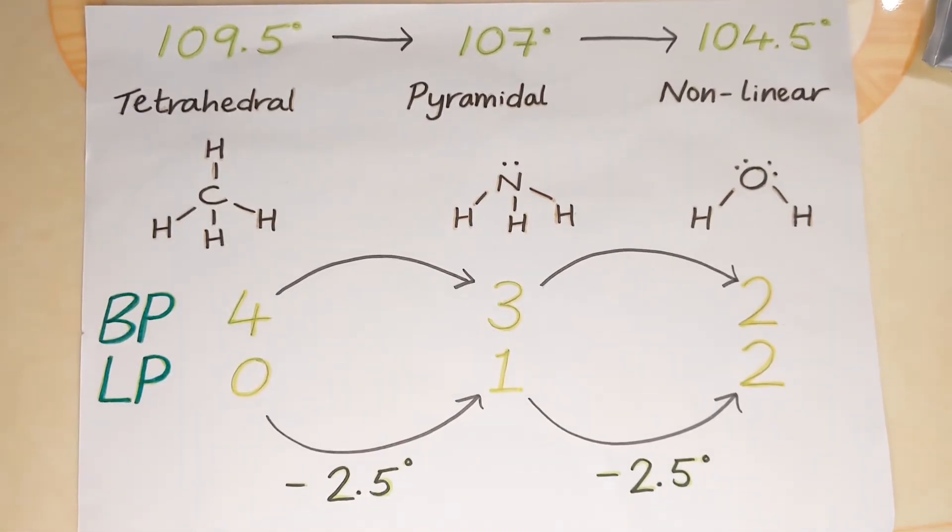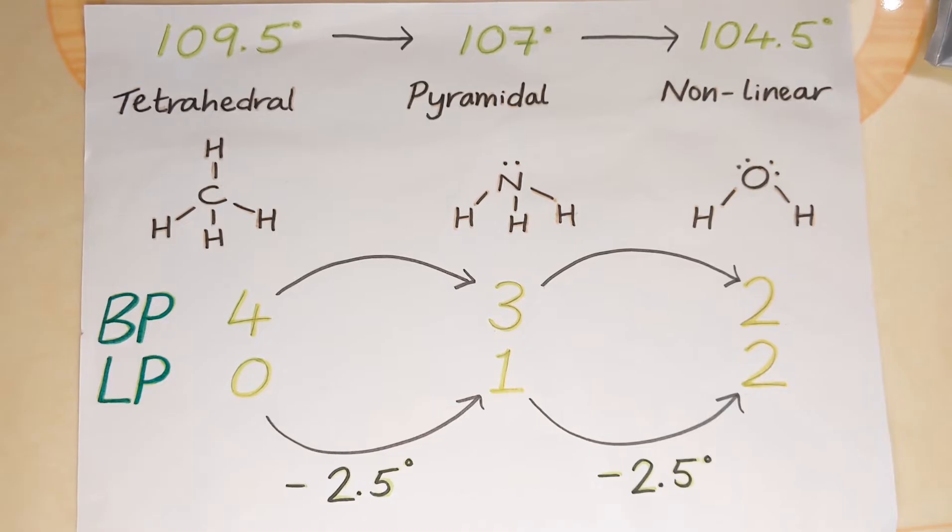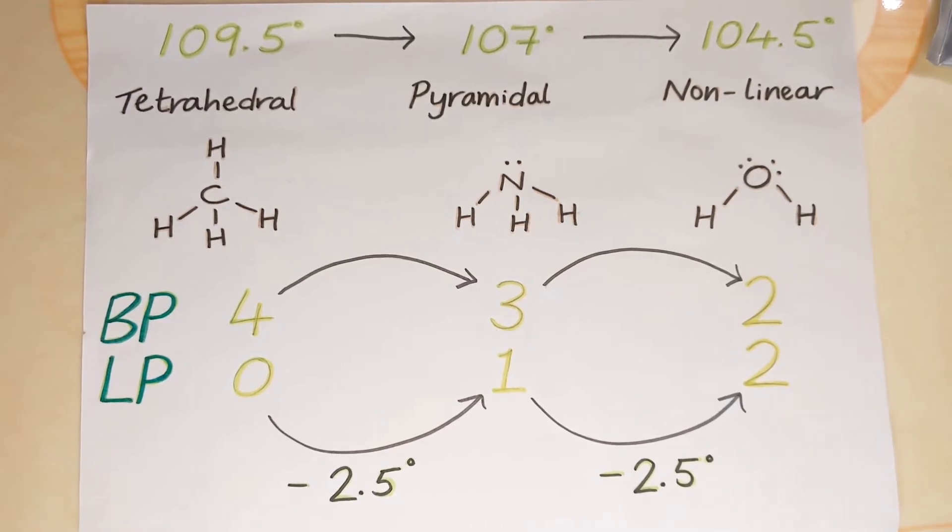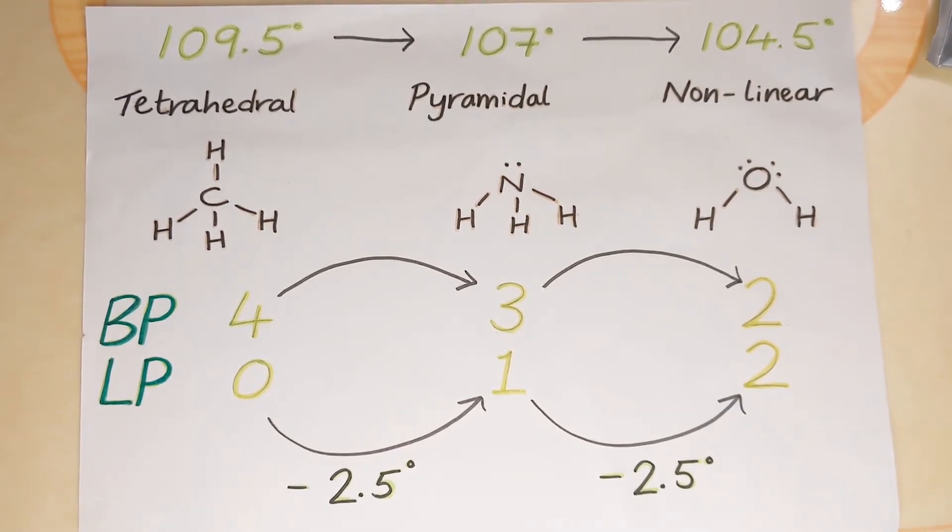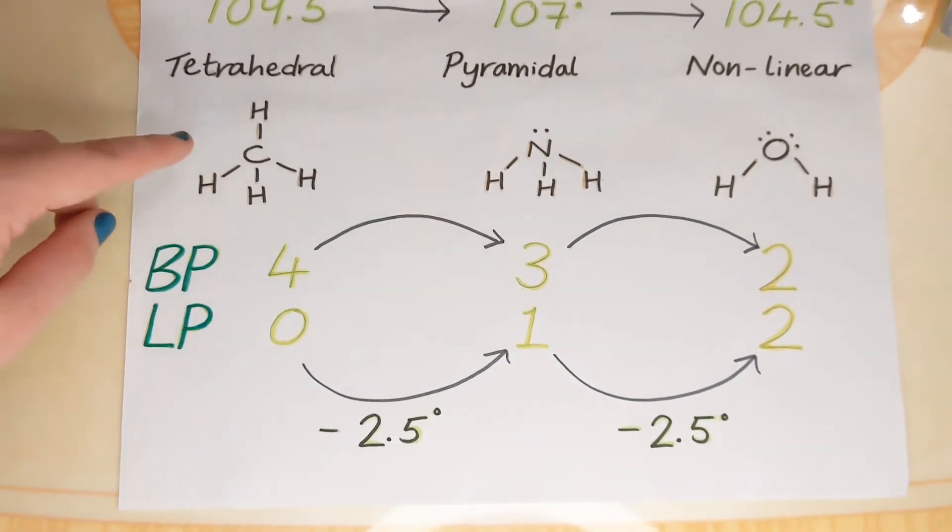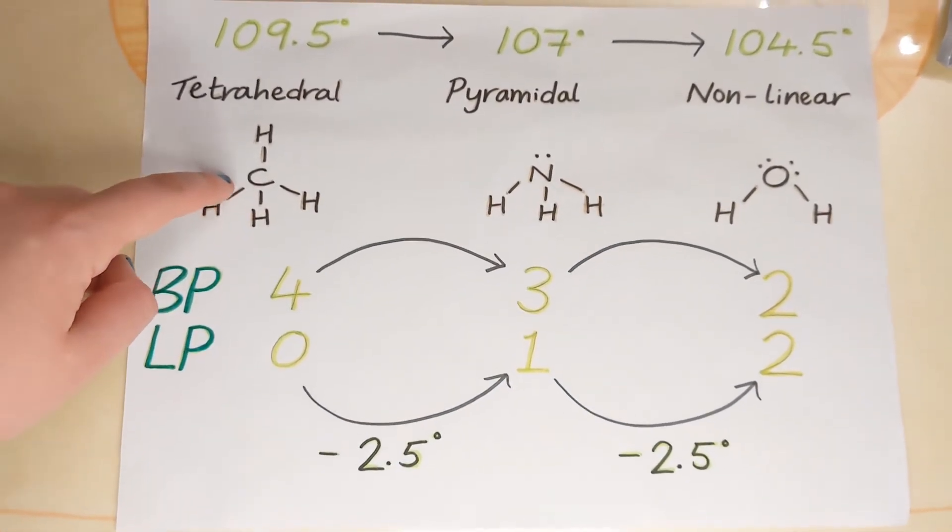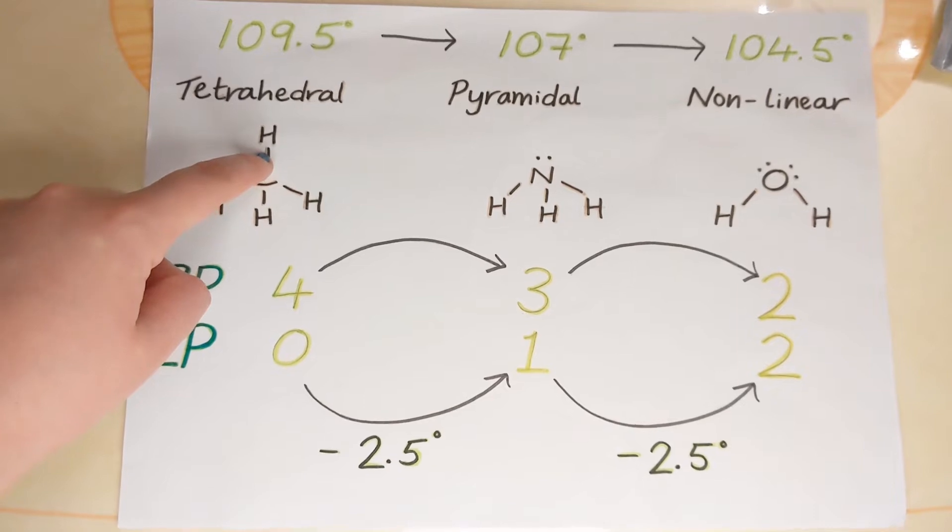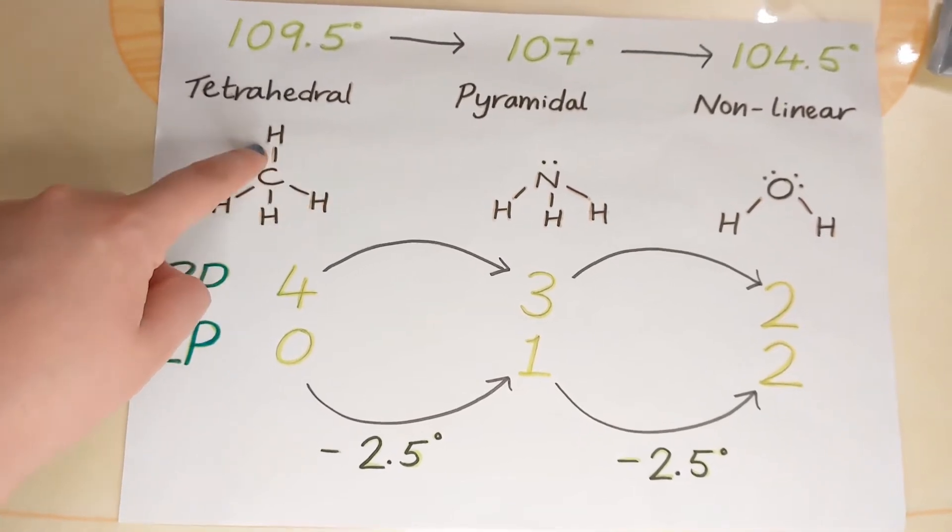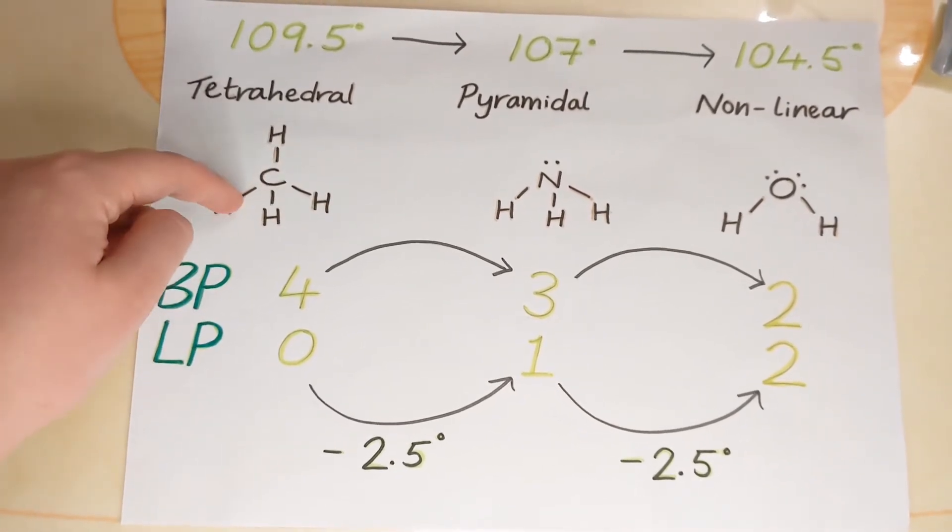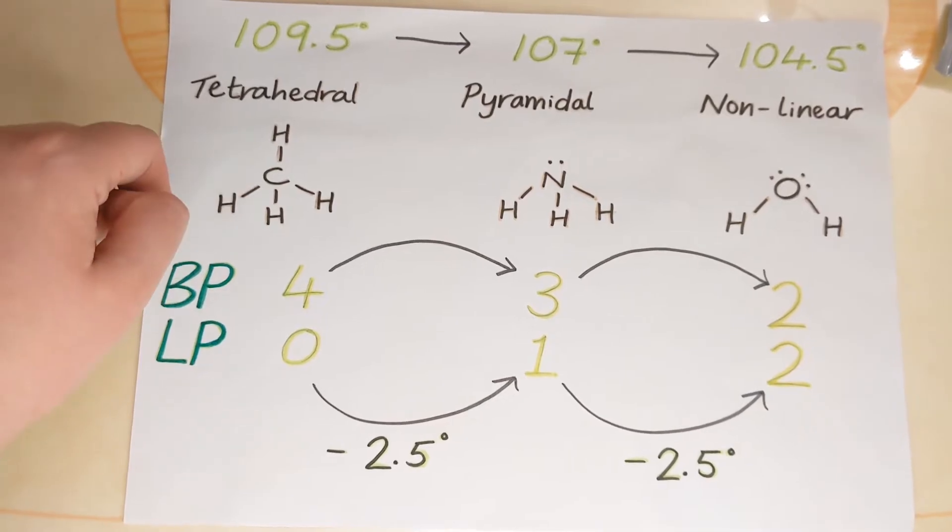So I've chosen to explain this rule using three different molecules, each with four electron pairs around their central atom. Now the only difference is that the first molecule methane has four bonding pairs. We can see it's got four single bonds and each of these single bonds contains one pair of electrons.